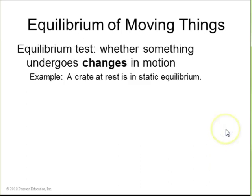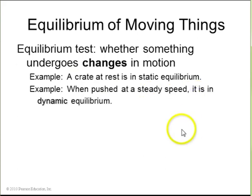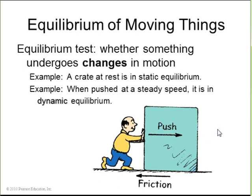The test to see if something is in equilibrium is whether it's changing its velocity. So a crate sitting at rest is in static equilibrium. If it's pushed at a steady speed, so the velocity is not changing, that's dynamic equilibrium. Also, net force is zero. So here's a guy pushing this crate along at a constant velocity in a straight line. His pushing force is equal to the friction force resisting motion, and it goes along at a steady speed.